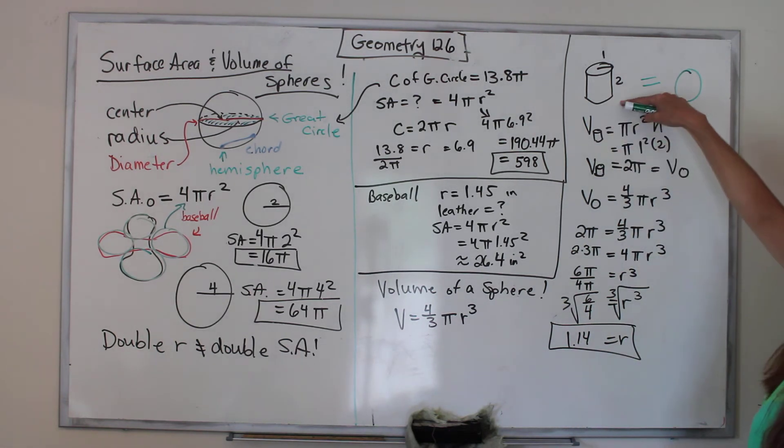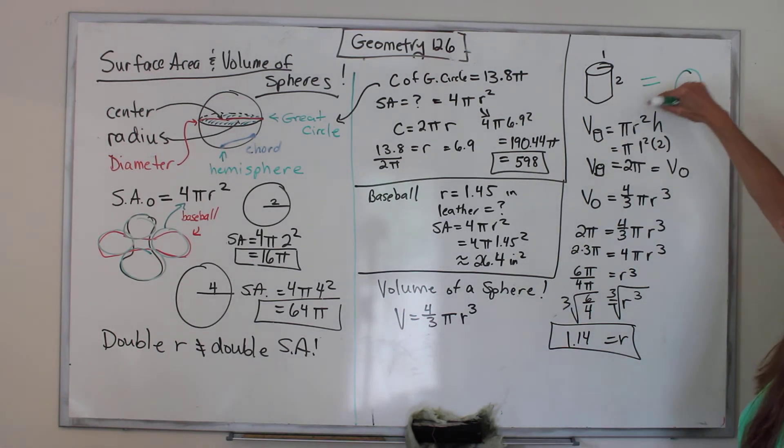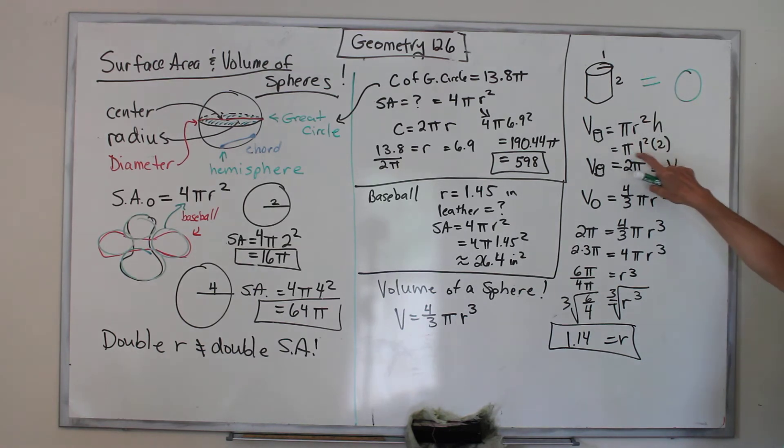First we need the volume of the cylinder, which is πr²h. So π(1²)(2), which is 2π. That's the volume of the cylinder, which is also the volume of the sphere.